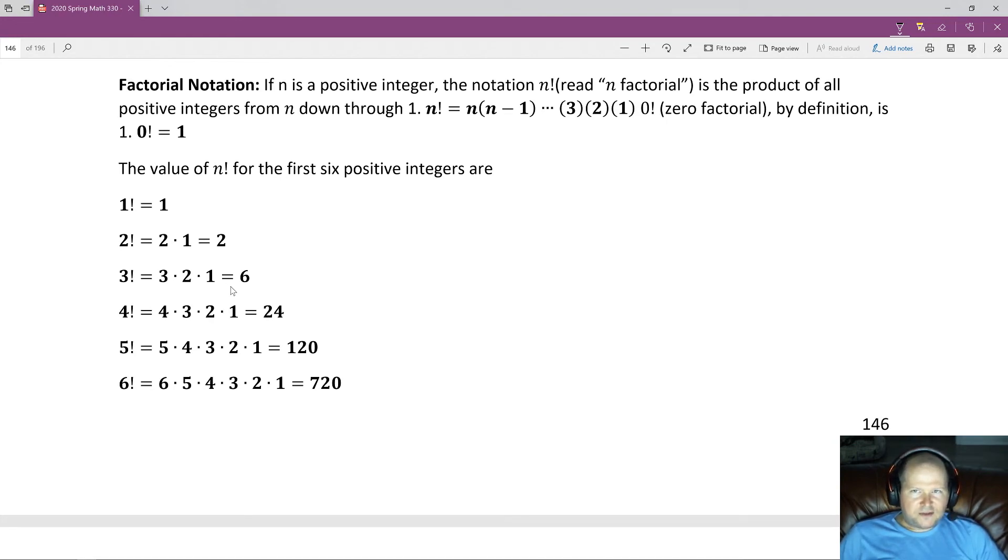Factorial notation. Factorial notation means that you are multiplying all the way up through that number. So 0 factorial is equal to 1. This is just something you want to memorize. You want to memorize this first one. That comes up once in a while.